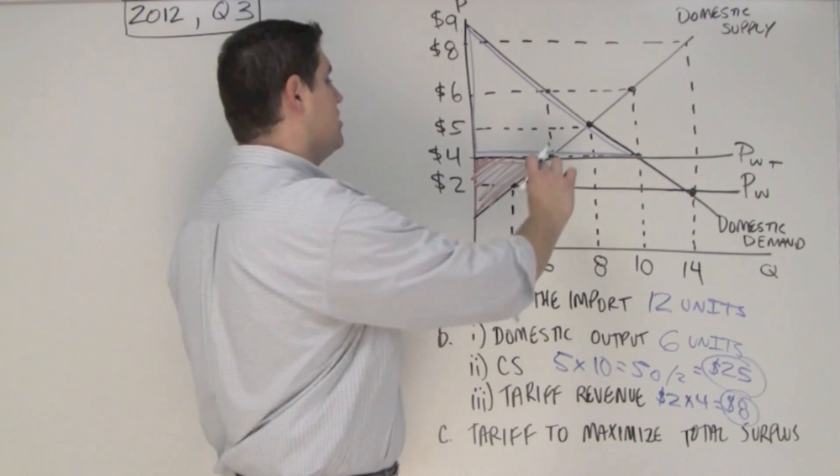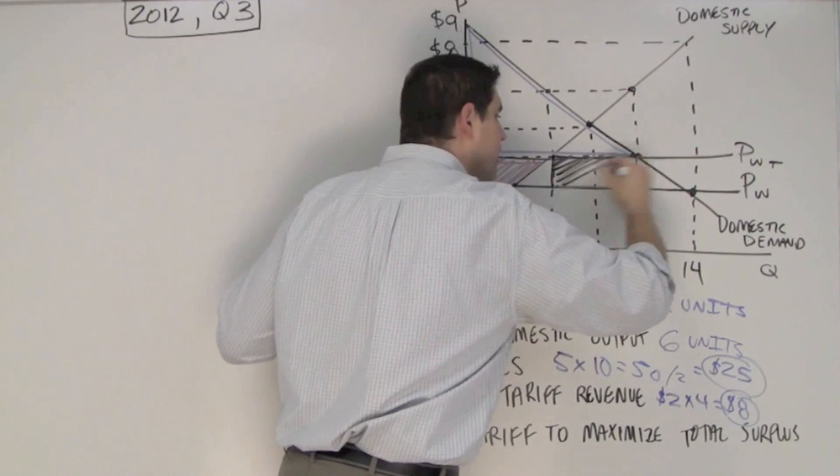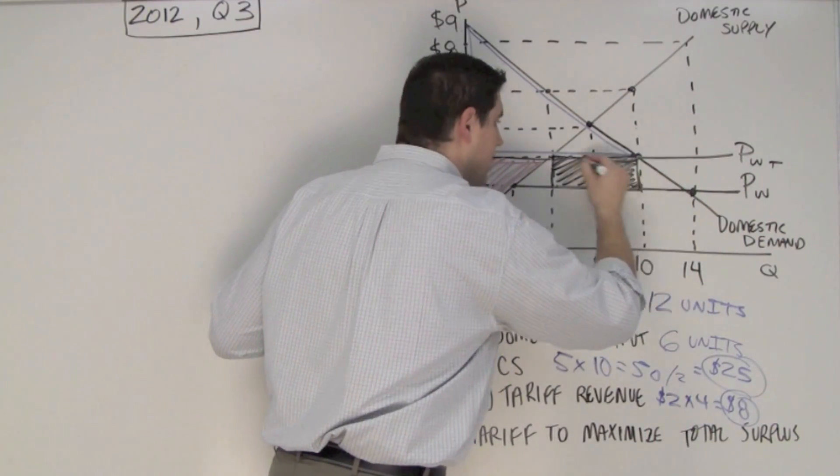Now graphically, it's right here. It's the $2 times that quantity. It's this right there represents the tariff revenue that the government keeps.